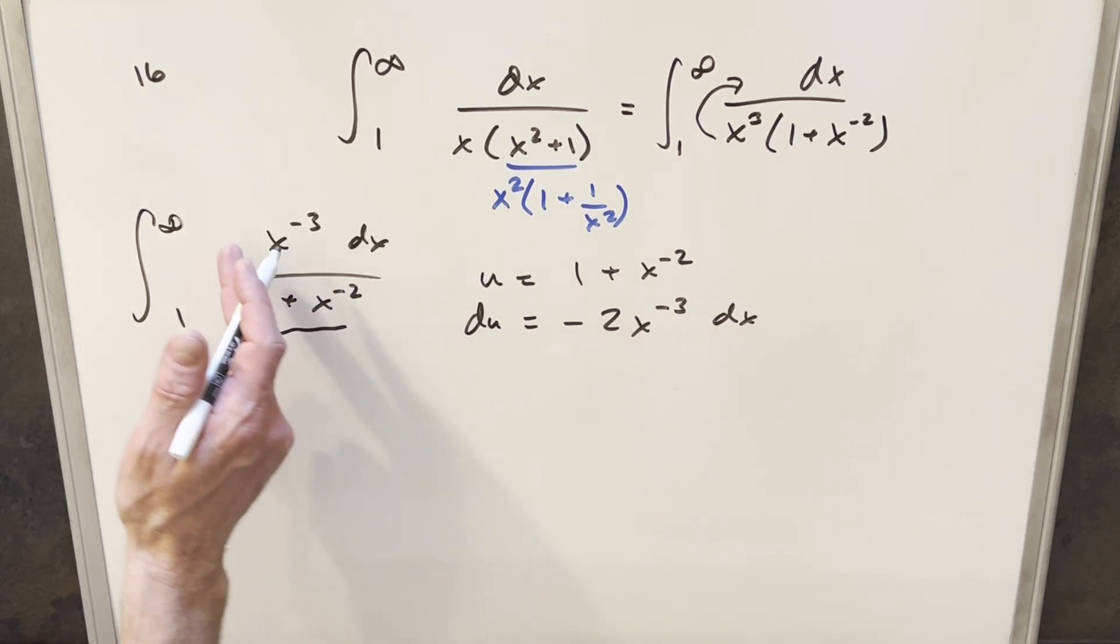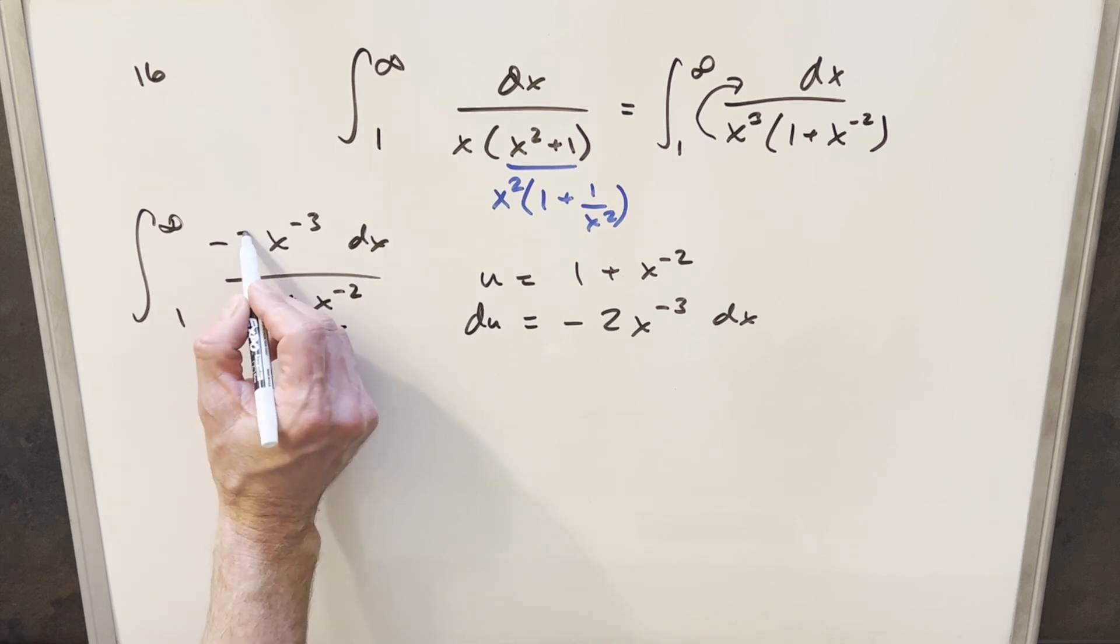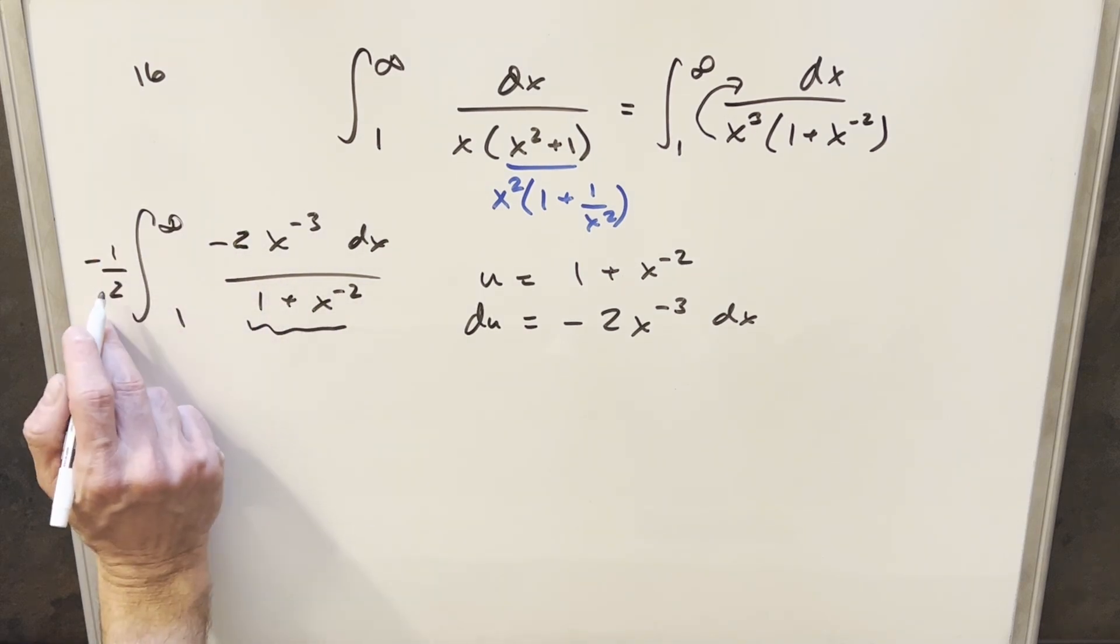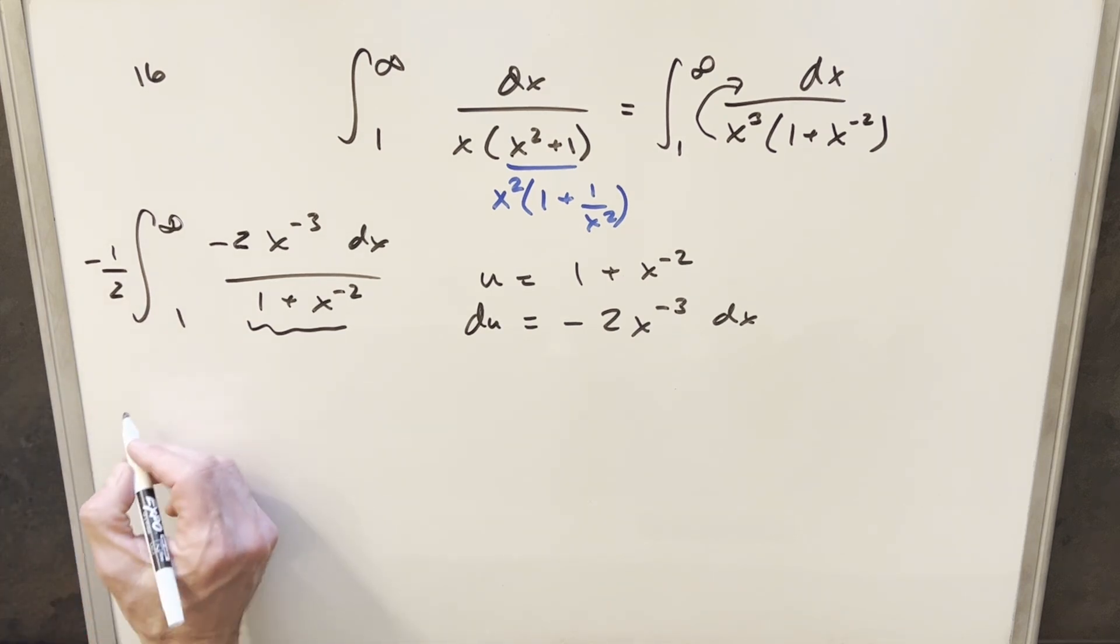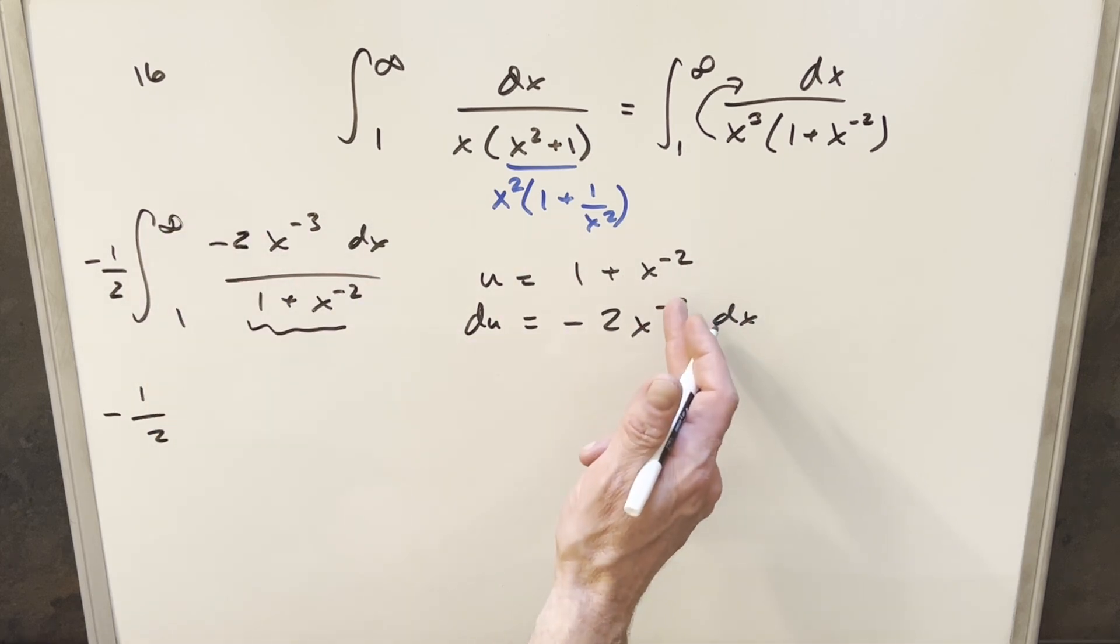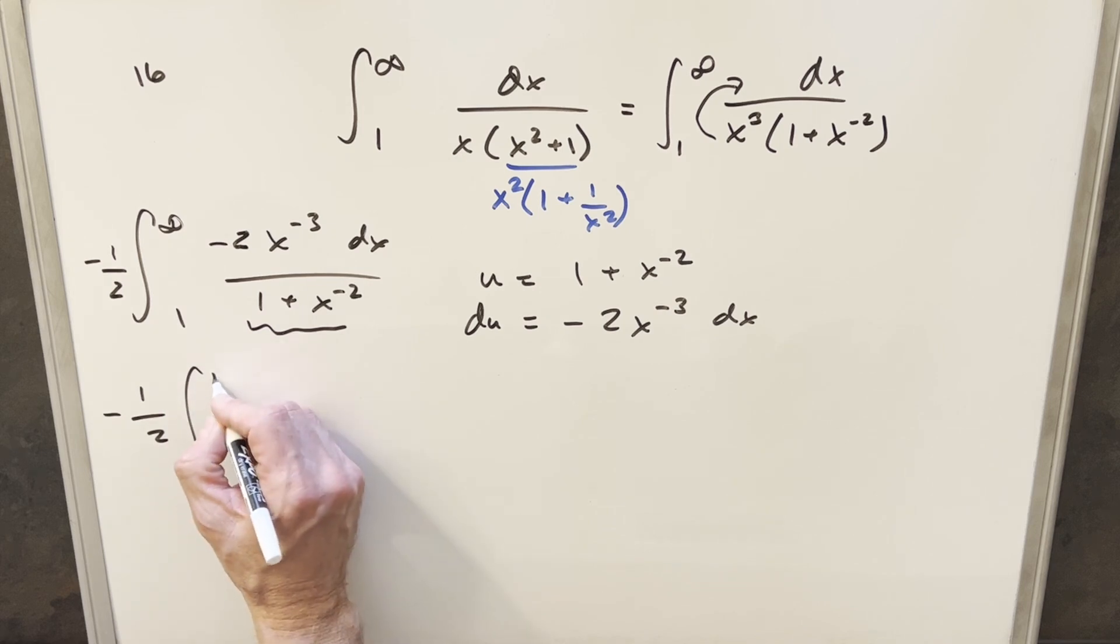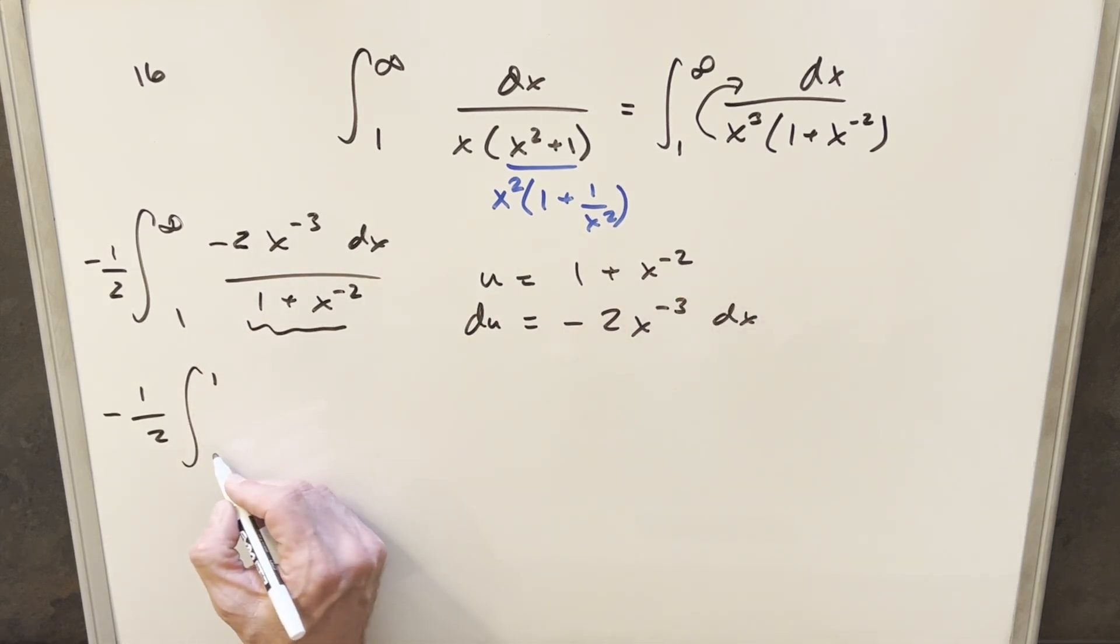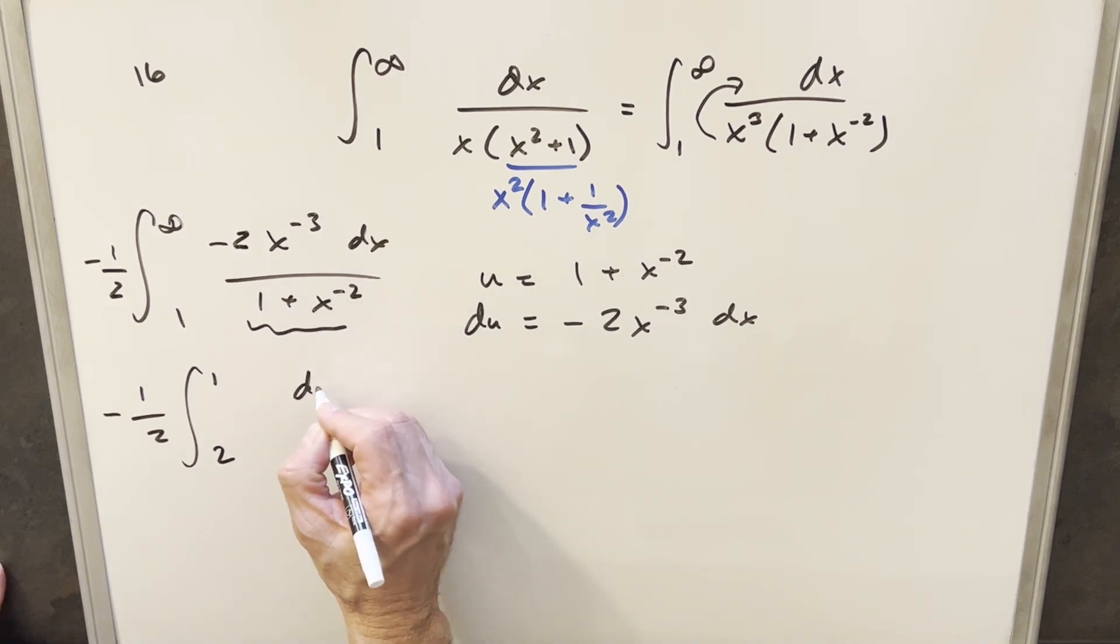But then I can just create this du in the numerator if I just multiply by minus 2 and then multiply by minus 1 half here. So we're just multiplying by 1. And now let's just go ahead with the substitution. So I'm going to have minus 1 half out front. Plugging infinity in here, well, 1 over infinity, that part is going to be 0. So this is actually just going to 1 for the upper bound. Then plugging 1 over here, we're going to end up with 1 plus 1 or just 2.